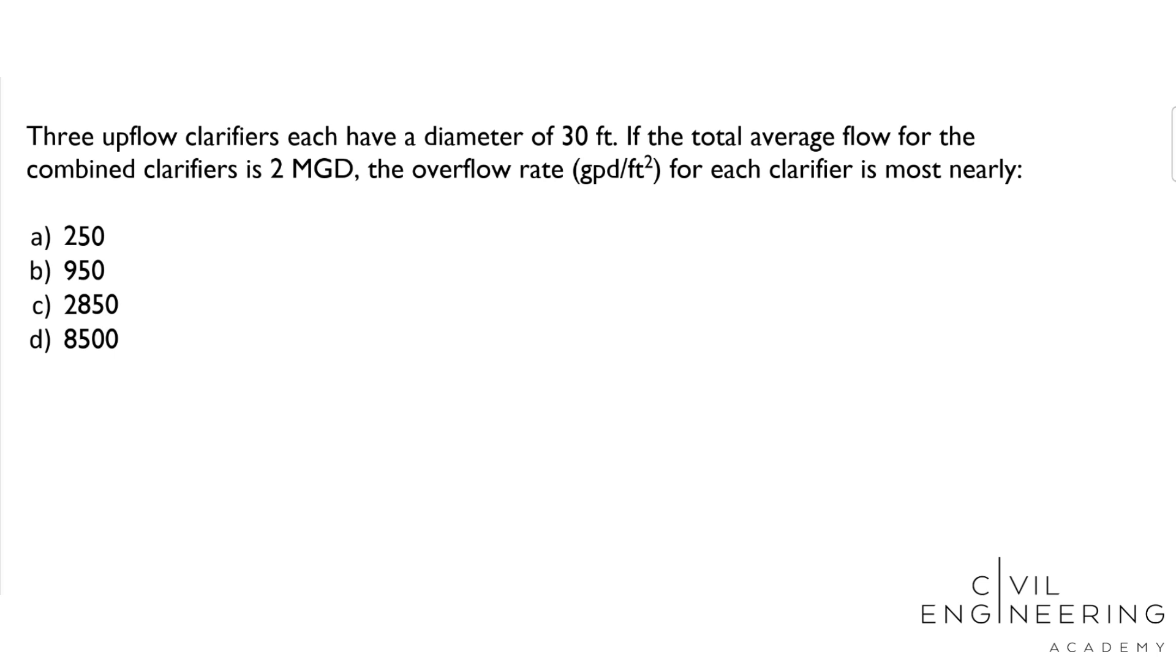So the problem statement says three upflow clarifiers each have a diameter of 30 feet. If the total average flow for the combined clarifiers is 2 million gallons per day, the overflow rate in gallons per day per feet squared for each clarifier is most nearly what? And then we have these four answer choices.